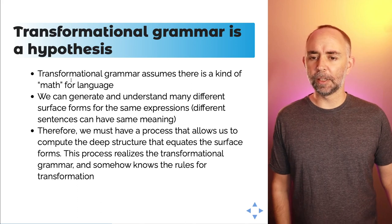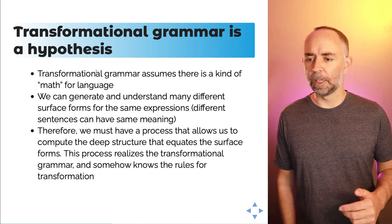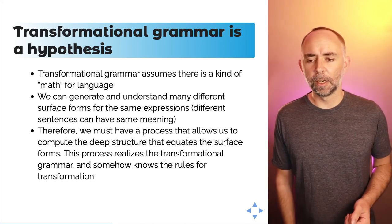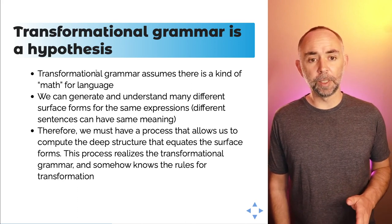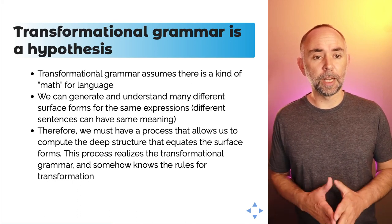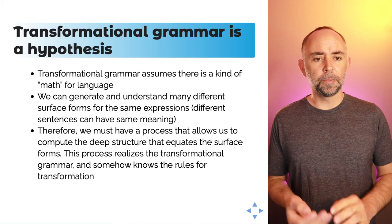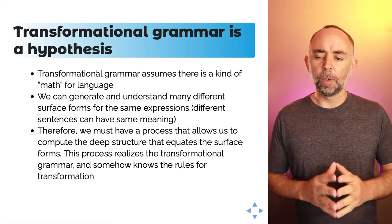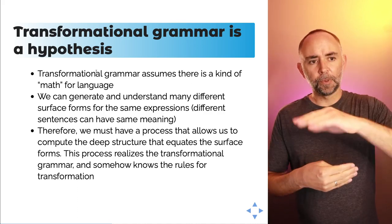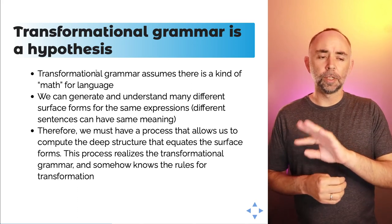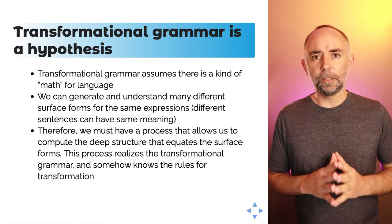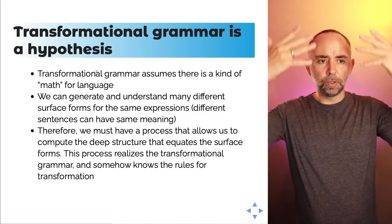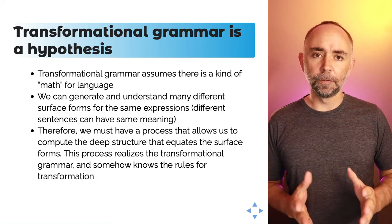Potentially language works a little like this. We might have something like a transformational grammar for language — we can generate and understand many different surface forms for the same expressions. Different sentences can have the same meaning. Therefore, we must have a process that allows us to compute the deep meaning or deep structure that equates the surface forms. One of Chomsky's ideas is that we have a special language process that codes the surface formats of the signs and symbols we use, and also transforms the surface features into deep structure so we can access the meaning of those symbols.